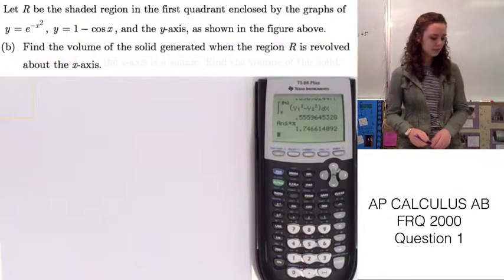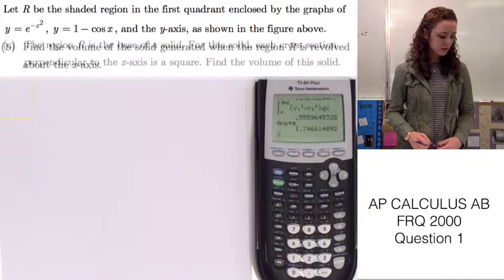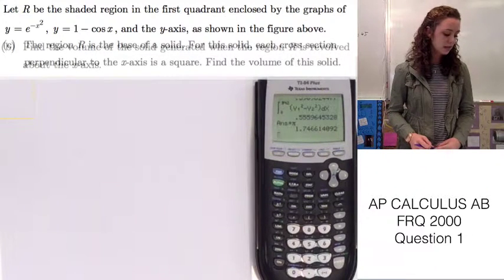And on to part C. Part C says the region R is the base of a solid. For this solid, each cross-section perpendicular to the x-axis is a square.